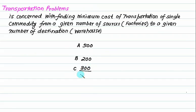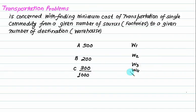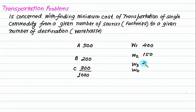So total production equals 1000. We have to transfer this to warehouse 1, warehouse 2, warehouse 3, and warehouse 4. It is not compulsory that the number of factories and the number of warehouses are the same. But what we produce must be supplied according to their region-wise requirements, which will be different. The requirement of warehouse 1 is 400 units, warehouse 2 is 150 units, and warehouse 3 is 250 units.